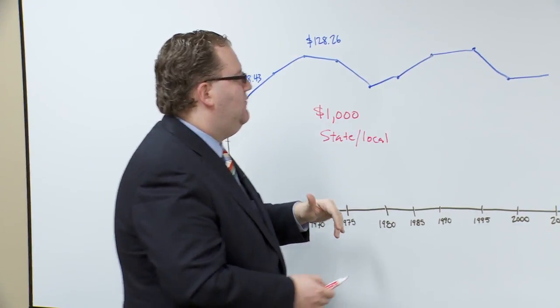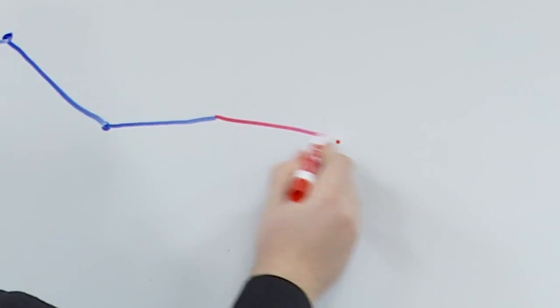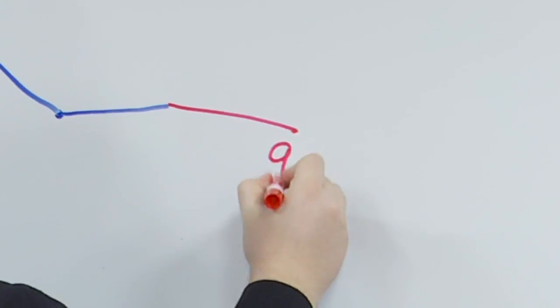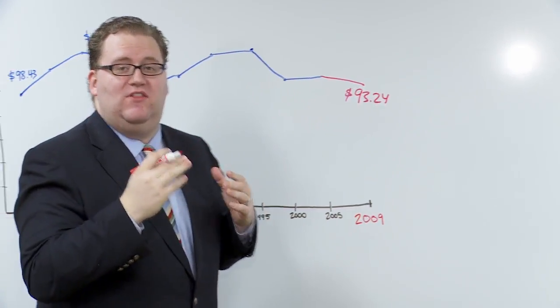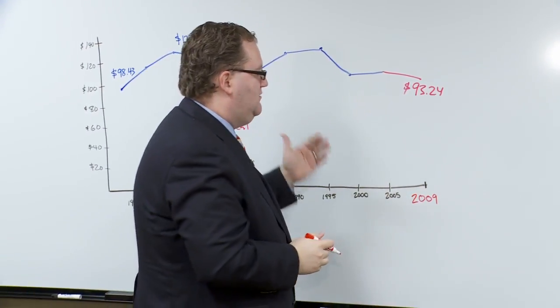It sort of ebbs and flows over time. Now we reach 2009, the lowest point in 50 years. $93.24 is what Washingtonians paid for every thousand dollars of income they earned, adjusted for inflation.